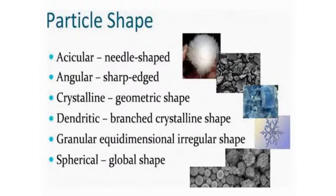So let's look at the different types of particle shape. Number one is acicular — it has a spike-like structure. The next one is angular — it has angles. Then we have the crystalline shape, just like table salt or sugar. Then we have the dendritic, which has a plant's crystalline shape. Then we have the granular shape. And finally the last one is the spherical shape.